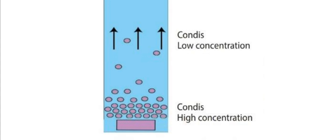The concentration of Condy's particles is high around the cube, which means there are more Condy's particles within a unit volume. There is less amount of Condy's particles in the upper part of the water in the beaker. Condy's particles move randomly from a region of higher concentration to a region of lower concentration.